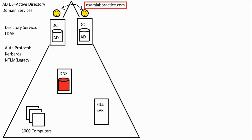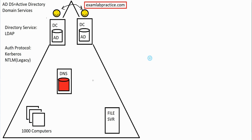All of this together — the concept of domain controllers and the triangle you see — provides centralization. We moved away from peer-to-peer networking where every machine was its own boss, to a centralized environment. Domain controllers help us centralize, and the DNS service helps us centralize. We now have central control over things.